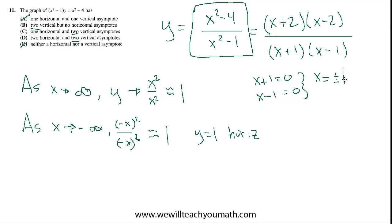These were the vertical asymptotes, and y equals 1 is the horizontal. So the best choice is C: one horizontal and two vertical asymptotes. If you throw this original function into your calculator, you'll be able to actually see that that's exactly what the graph shows.